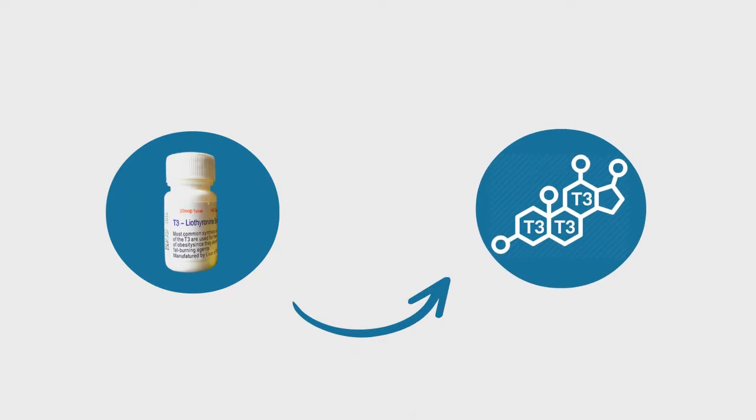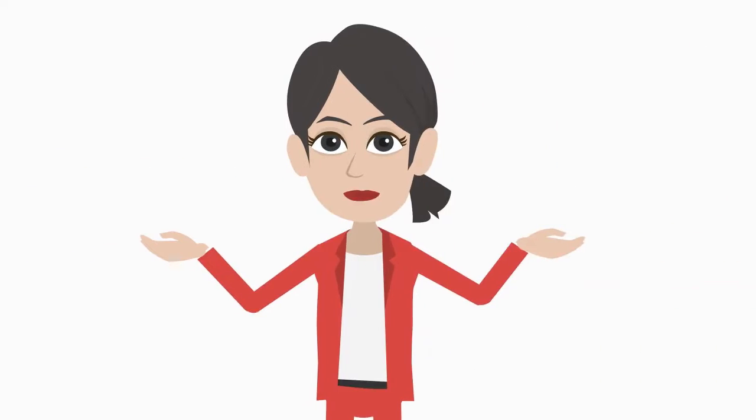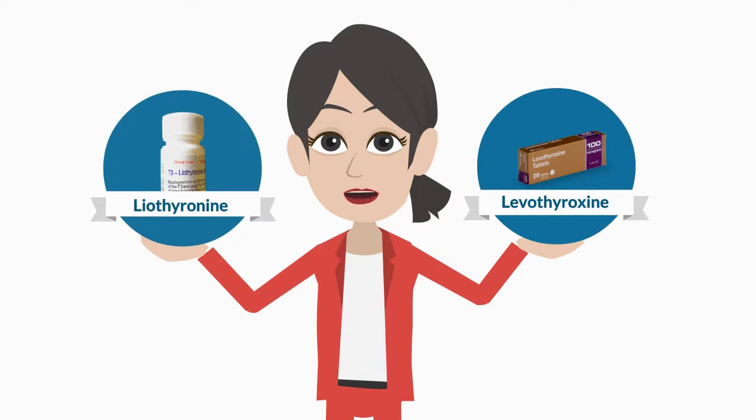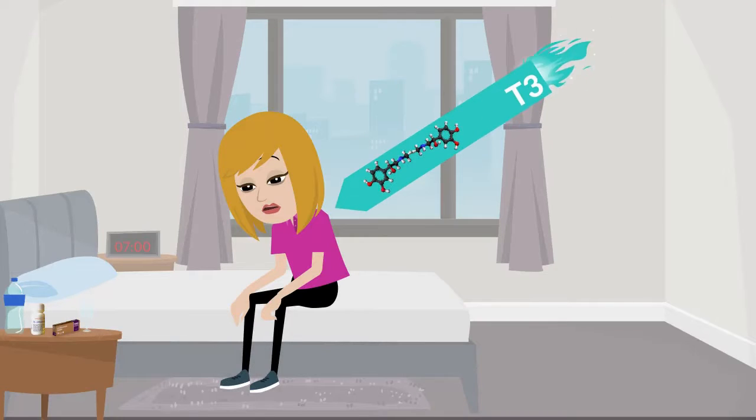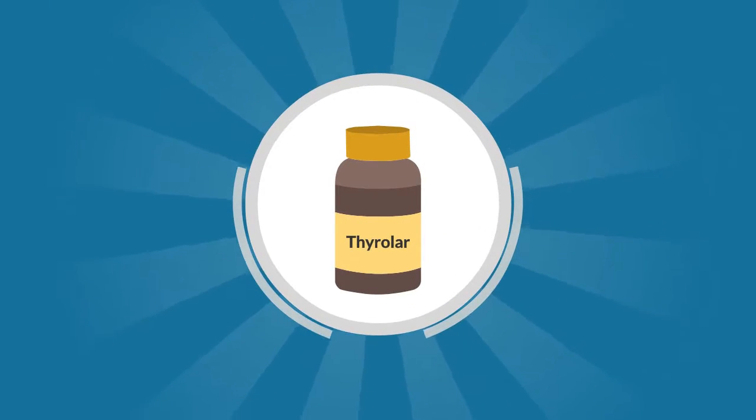Some brands of liothyronine are Cytomel and Thyrostat. Liotrix combines both levothyroxine and liothyronine and works by supplementing the lack of both hormones in the body. Thyrolar is an example of this drug.